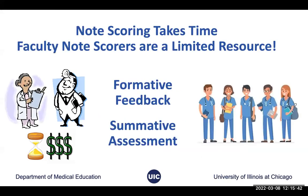What we saw was that scoring these notes took a lot of time and it was really hard to get faculty to do it. We were only able to get faculty to score the one end-of-M3 summative OSCE. It took well over a month to get all notes scored for our 180 students in Chicago. There was no way we could get faculty to score notes to provide formative feedback — so we were doing summative assessment on something without giving students practice and formative feedback. That's a problem.